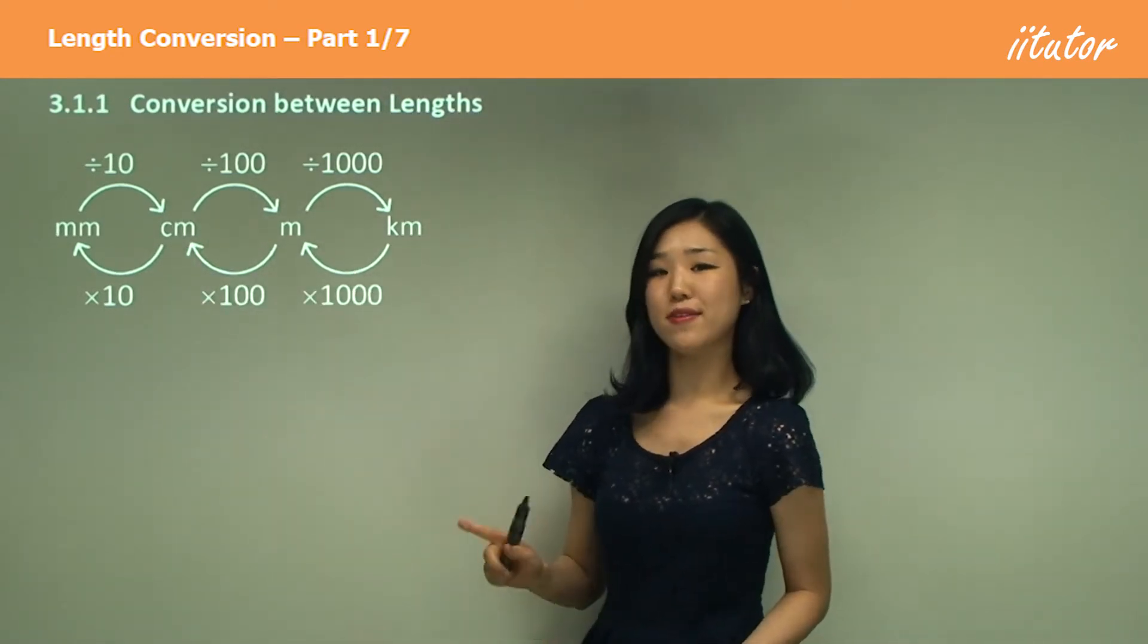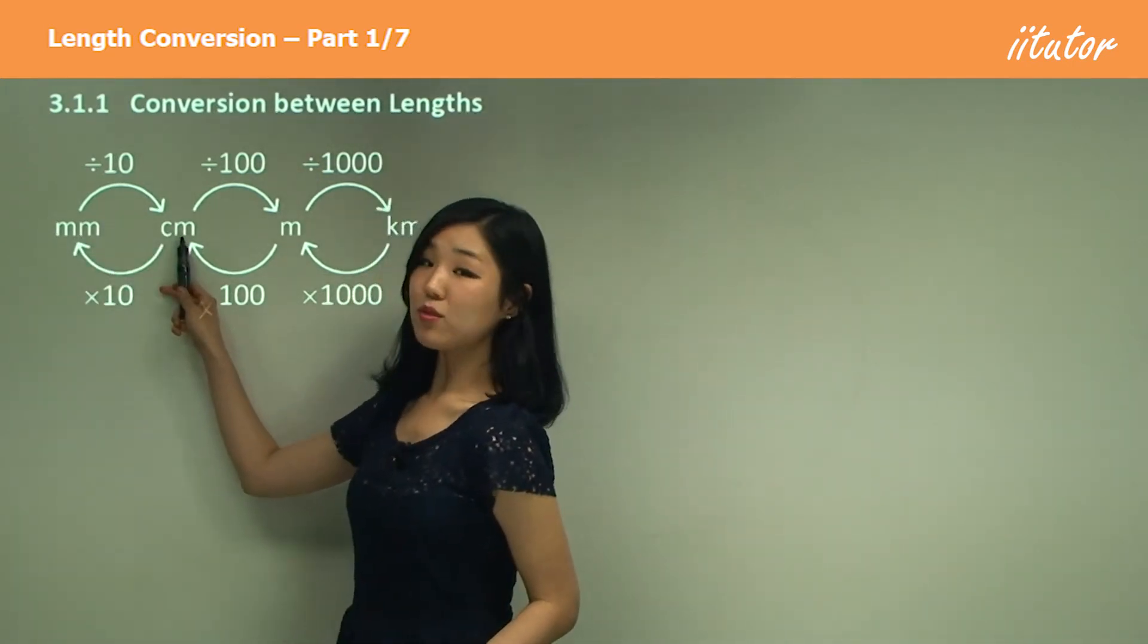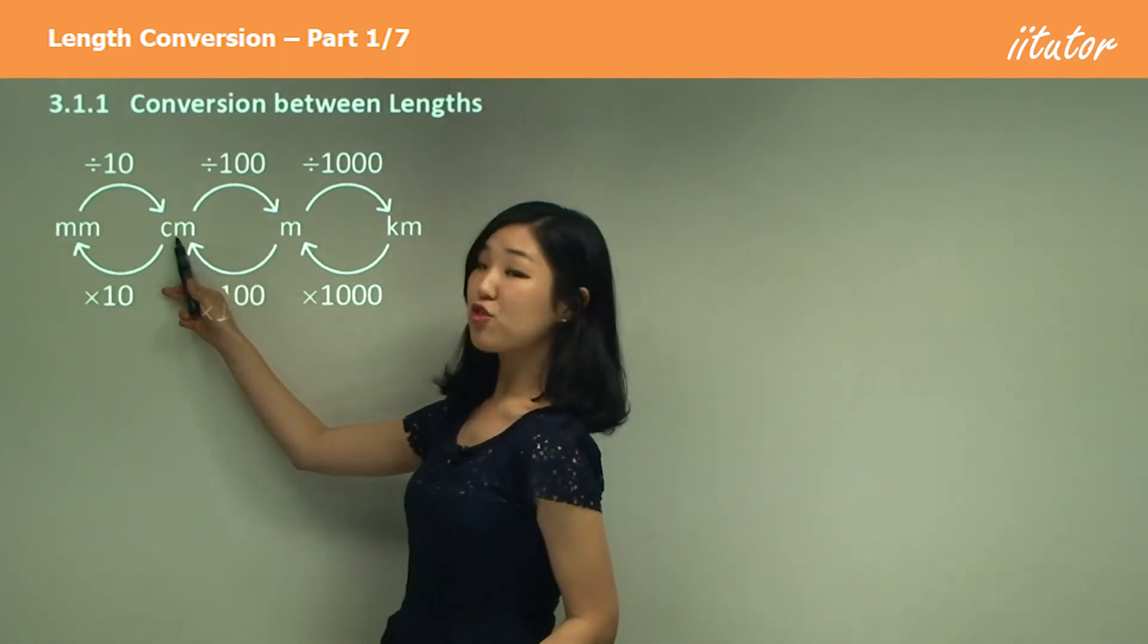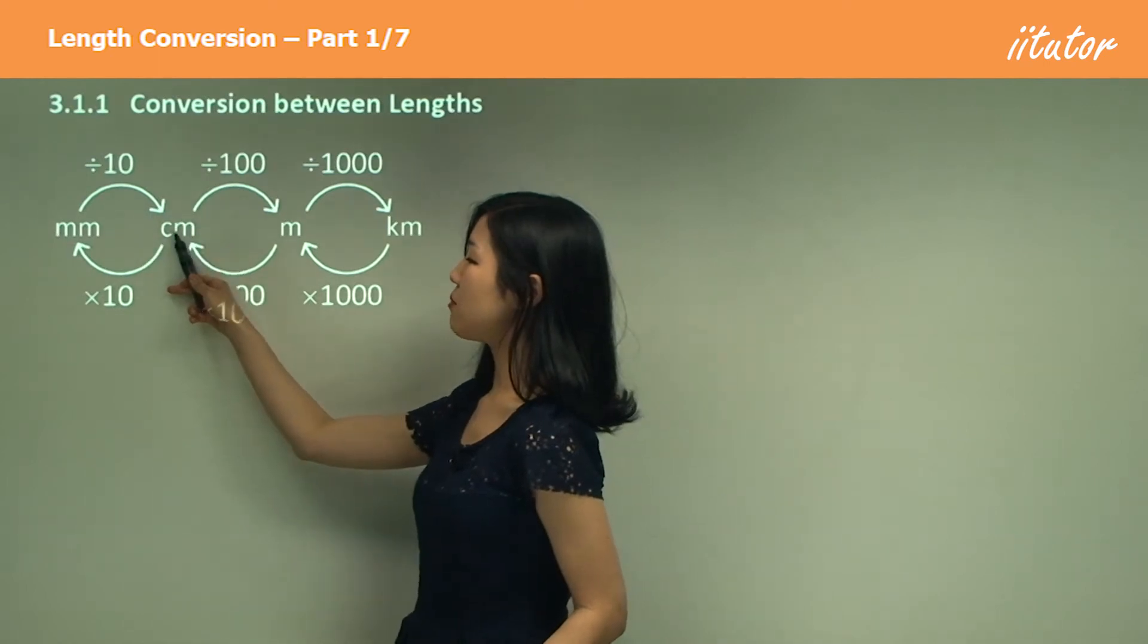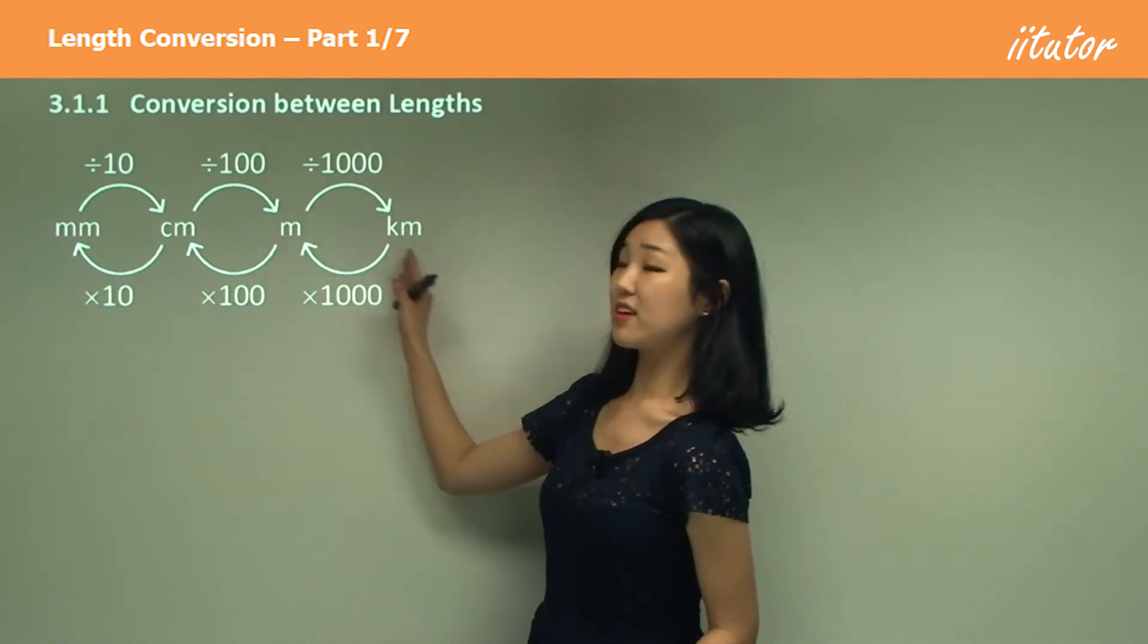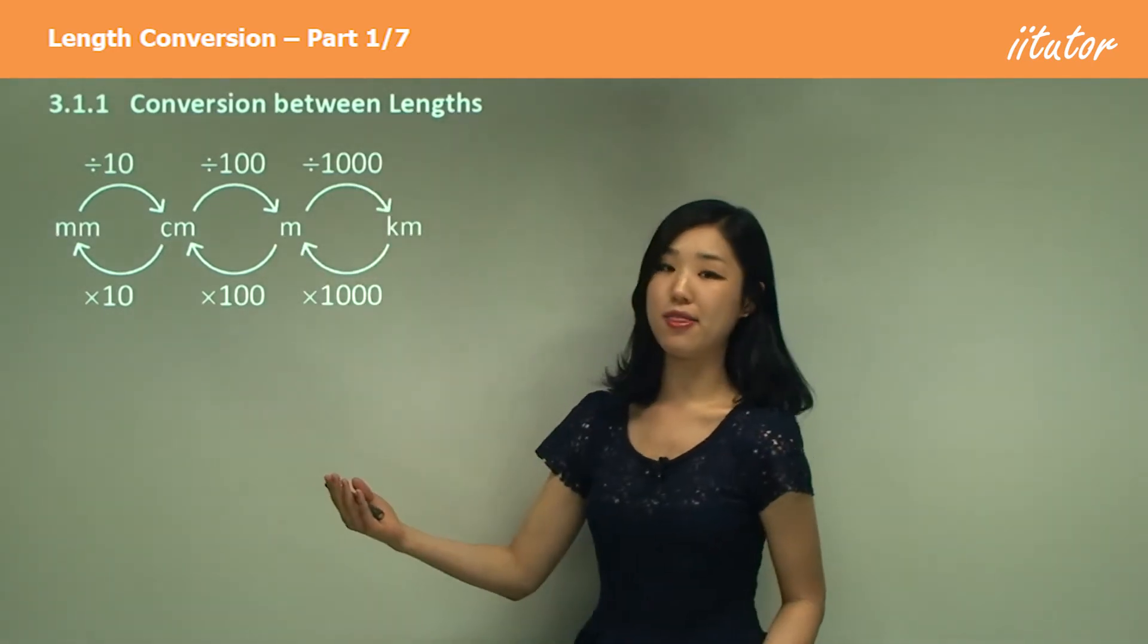There are 10 millimetres in one centimetre. So to go from millimetres to centimetres, we need to divide by 10. And then we know that there's 100 centimetres in one metre. So similarly, from centimetres to metres, we need to divide by 100. And same with this one, metres to kilometres, there's 1000 metres in one kilometre, so divide by 1000.